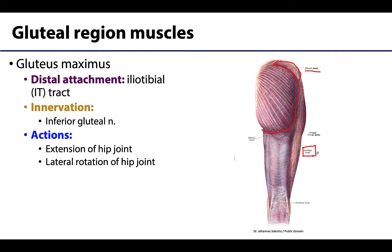This particular image labels it as the iliotibial band — you'll also see it called the iliotibial tract. This muscle has its own innervation separate from the gluteus medius and minimus: it will be the inferior gluteal nerve. It will also be supplied by the inferior gluteal artery as well as the superior gluteal artery, and that neurovascular supply enters into the deep portion of the muscle at about its mid portion.